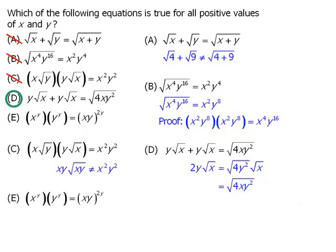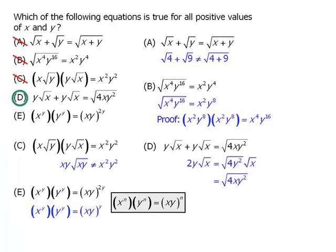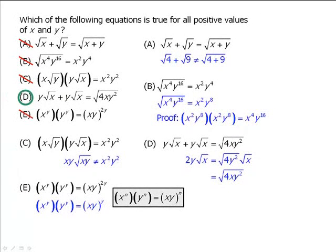However, let's just verify that the fifth equation is not true. Using this formula, we can show that the right-hand side must be x y all to the power of y. So we can eliminate the fifth equation, and we see that our answer must be D.